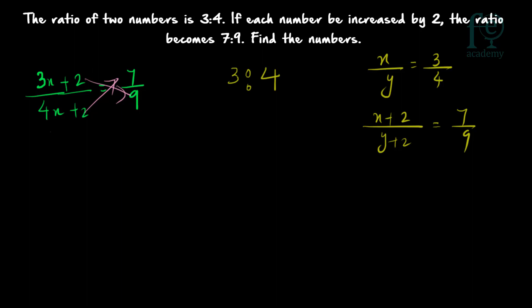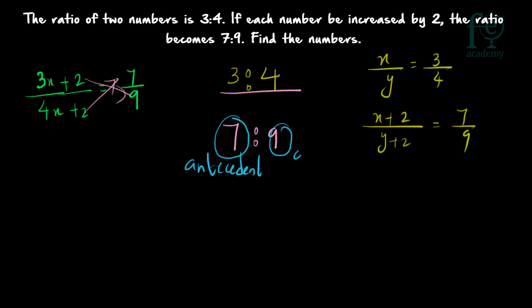One shortcut method: 3 is to 4 is the initial ratio and the final ratio is 7 is to 9. What you have to do is find out the difference between the numbers in the ratio. In every ratio, the first number is known as the antecedent and the next number is known as the consequent. In the final ratio, what is the difference between antecedent and consequent? It is equal to 9 minus 7, which is equal to 2.